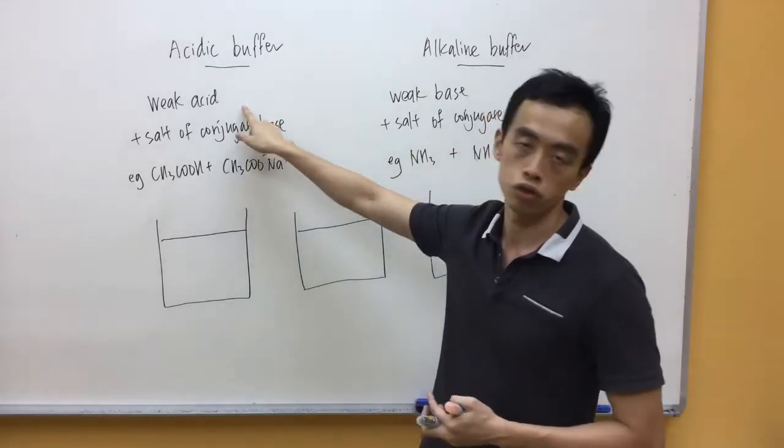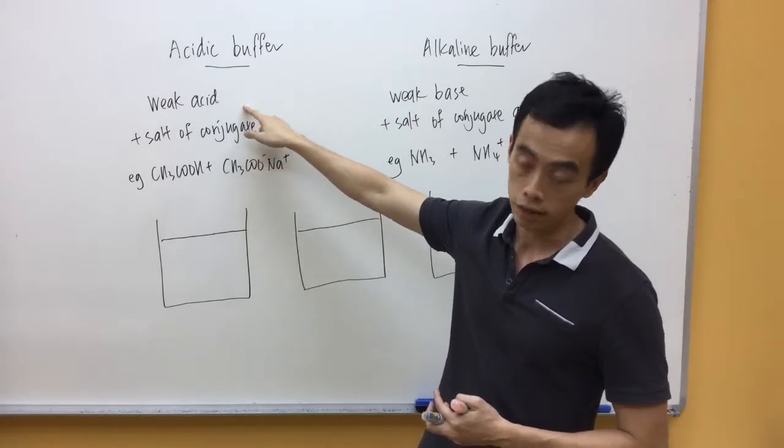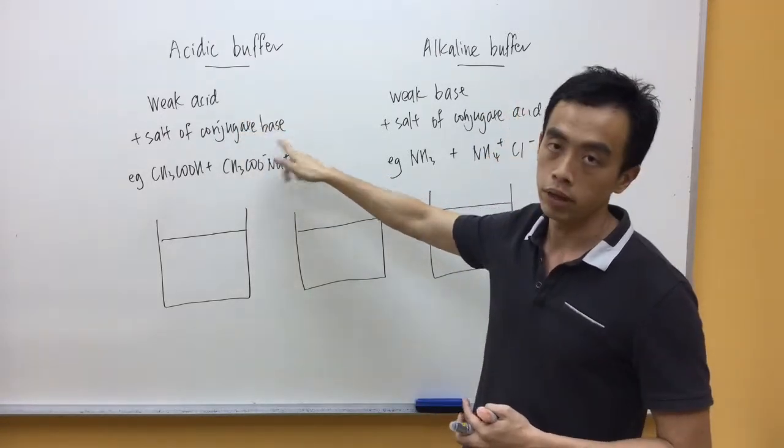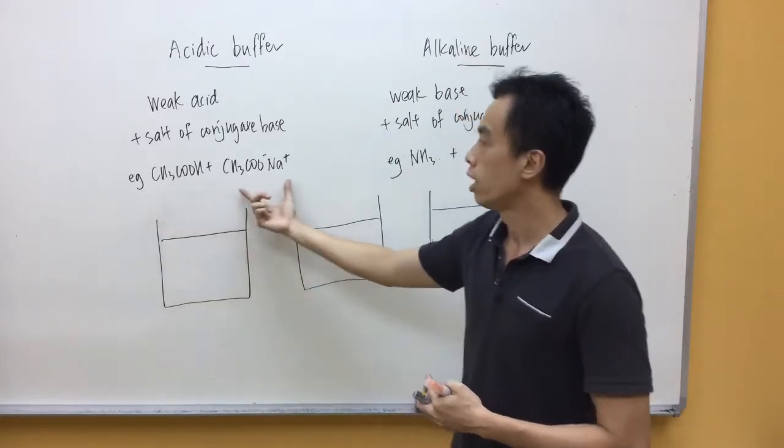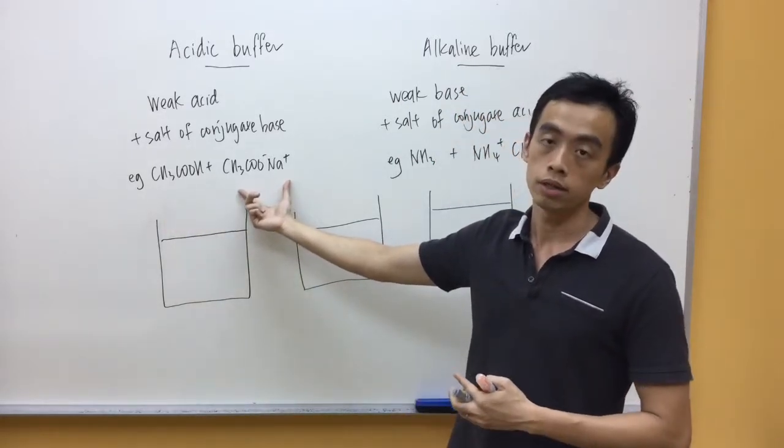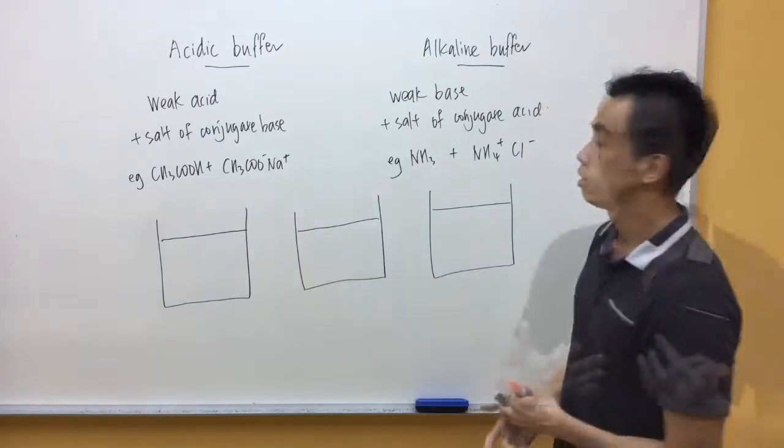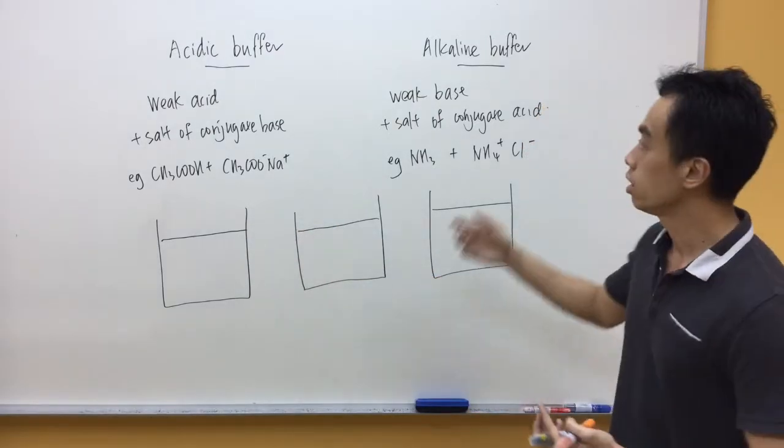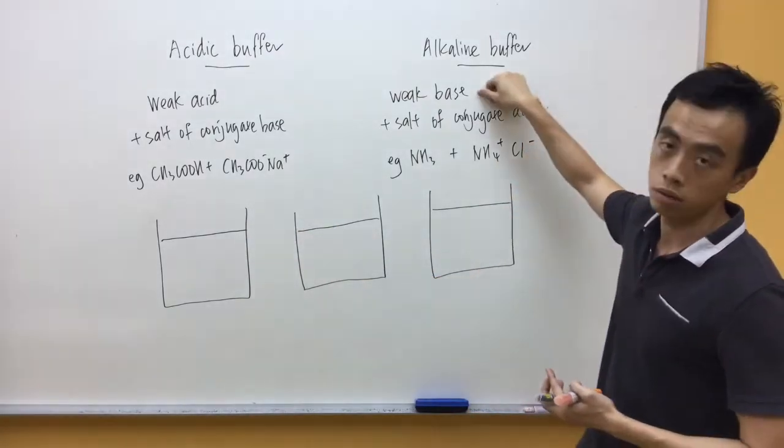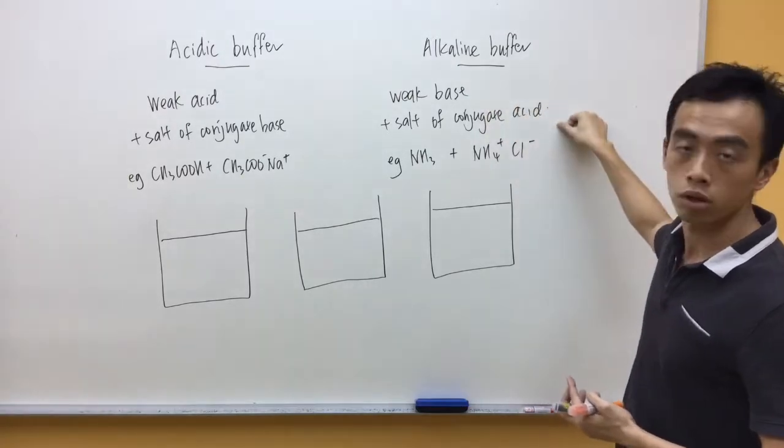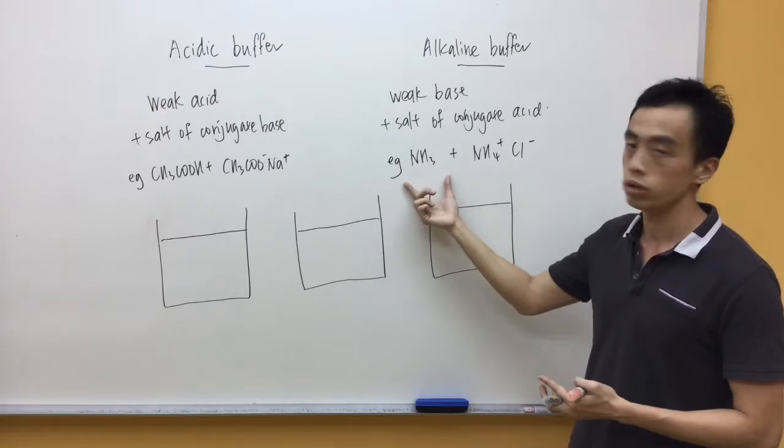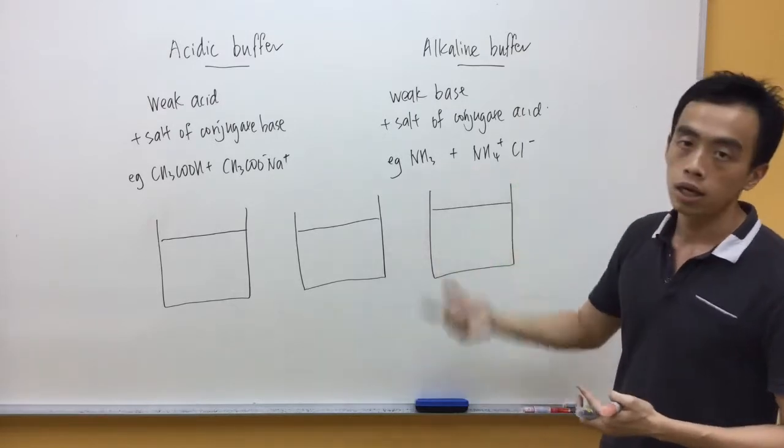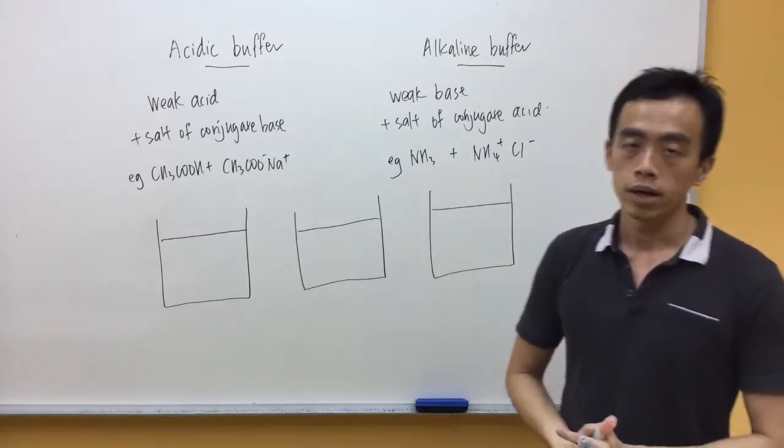An acidic buffer is a mixture of a weak acid and a salt of its conjugate base, for example CH3COOH and CH3COO-Na+. An alkaline buffer is a mixture of a weak base plus the salt of its conjugate acid, for example ammonia NH3 plus NH4+Cl-.